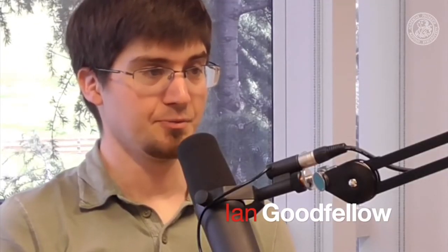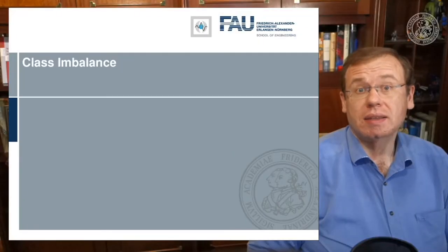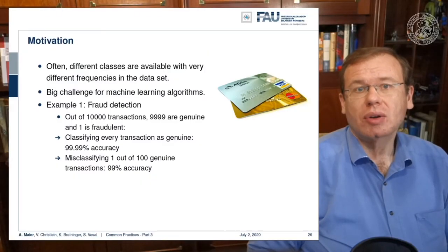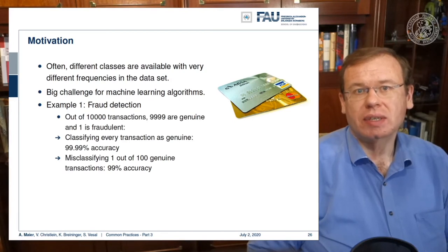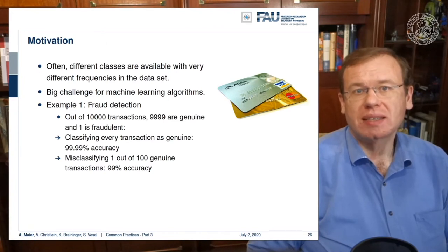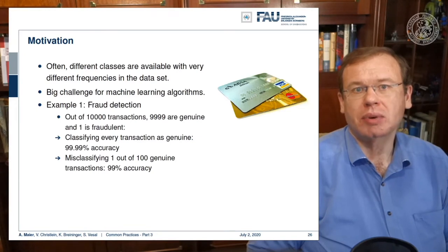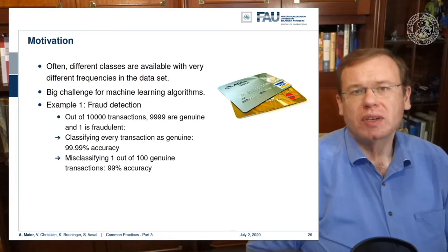Getting the generalization ability better is one of the most important bottlenecks. Let's take the example of fraud detection: out of 10,000 transactions, 9,999 are genuine and only one is fraudulent. So if you classify everything as genuine, you get 99.99% accuracy.